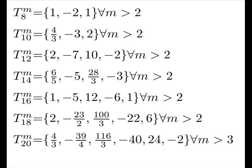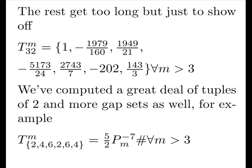Love to talk more about this but we have to move on. The rest get too long to show but just to show off here we have 32. We computed a great deal of tuples of 2 and larger, for example here we have this complex one which goes as the 7th minor primordial. Also note because the algebraic form has a single term in it this sequence is atomic. That's the definition of atomic as a single algebraic term.